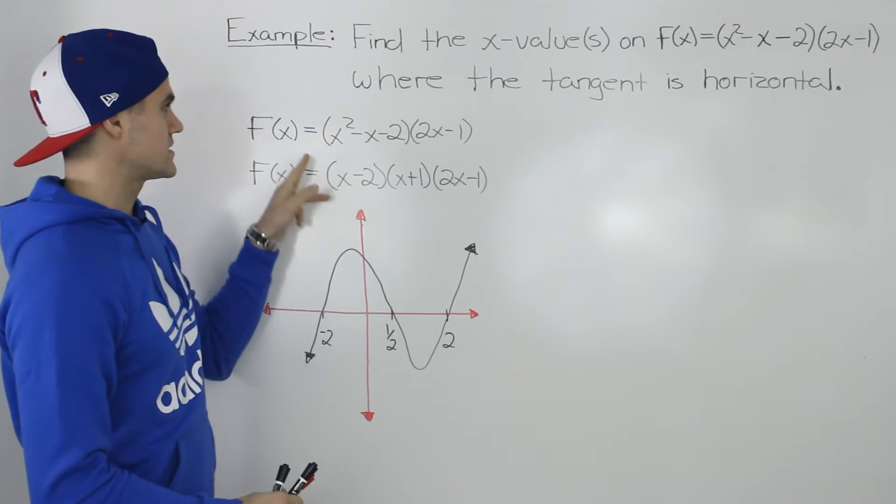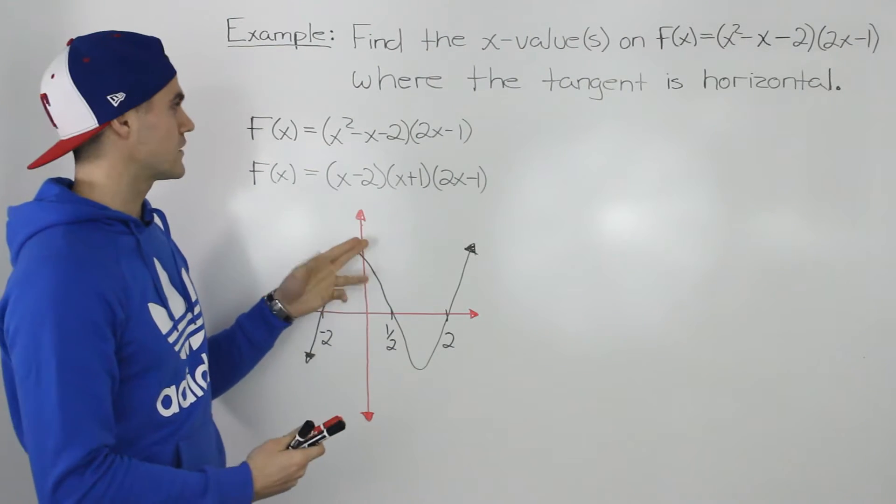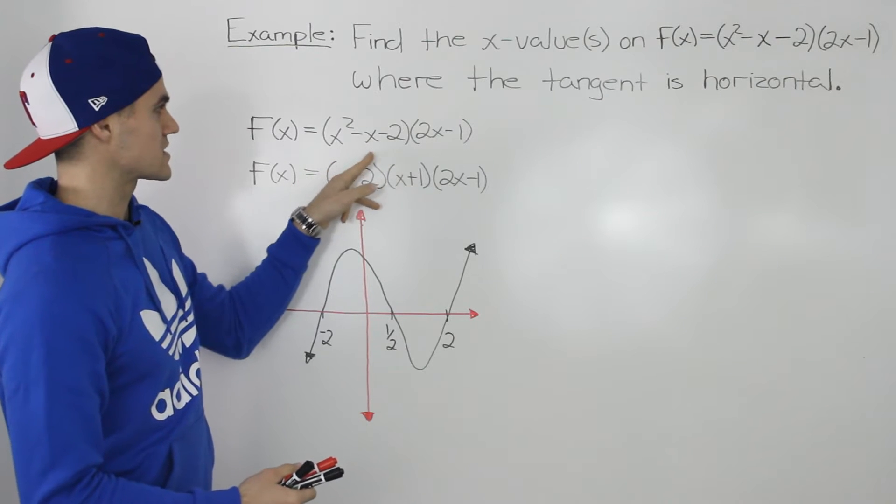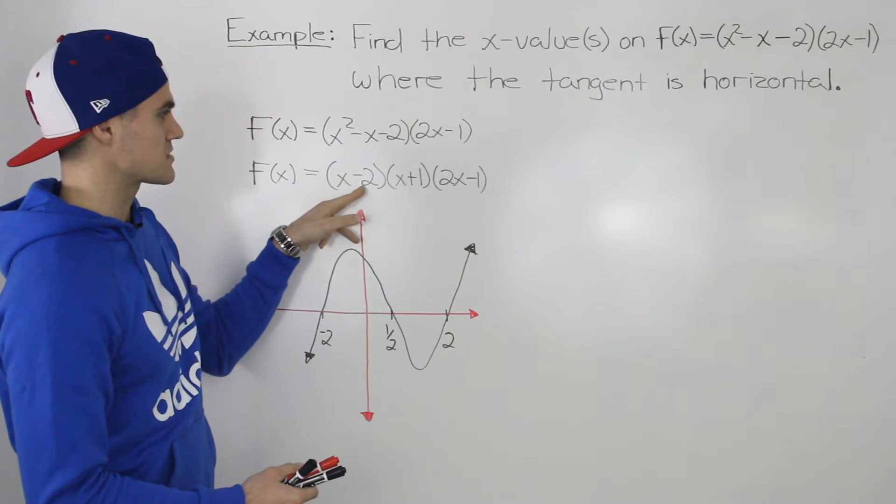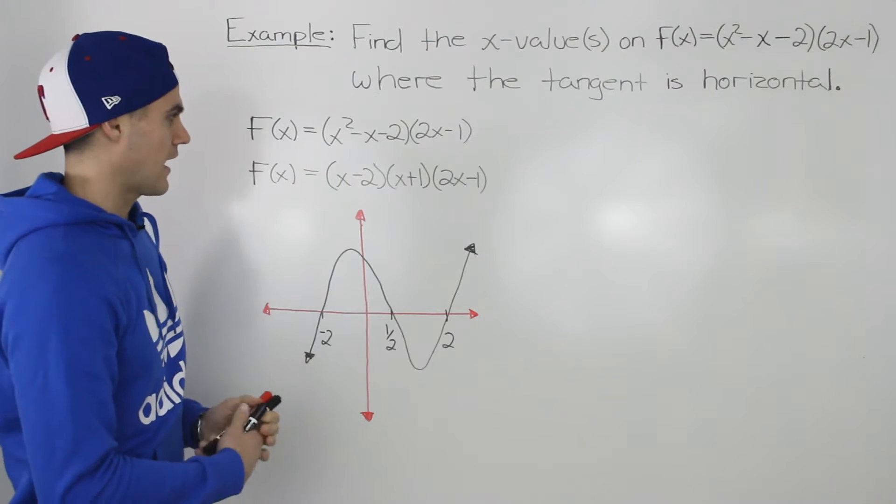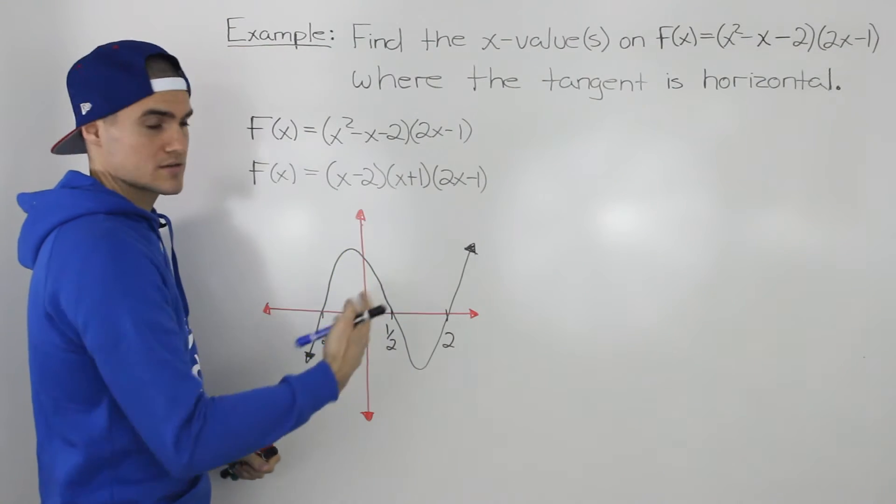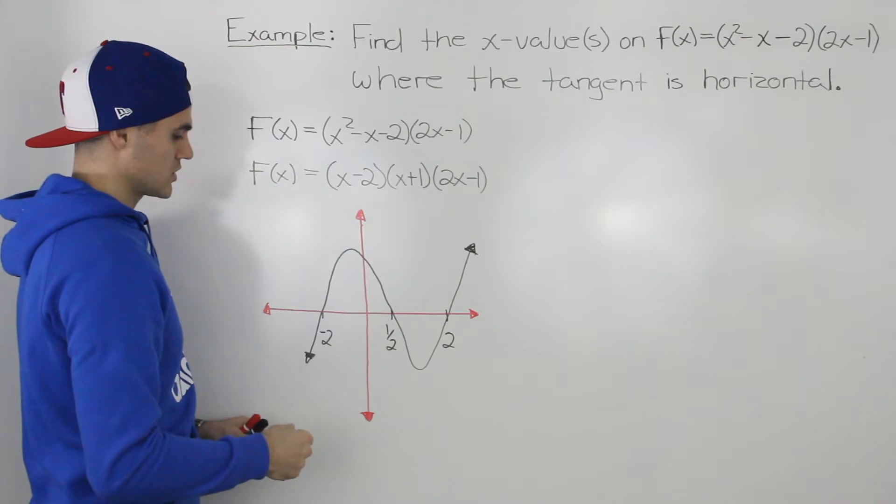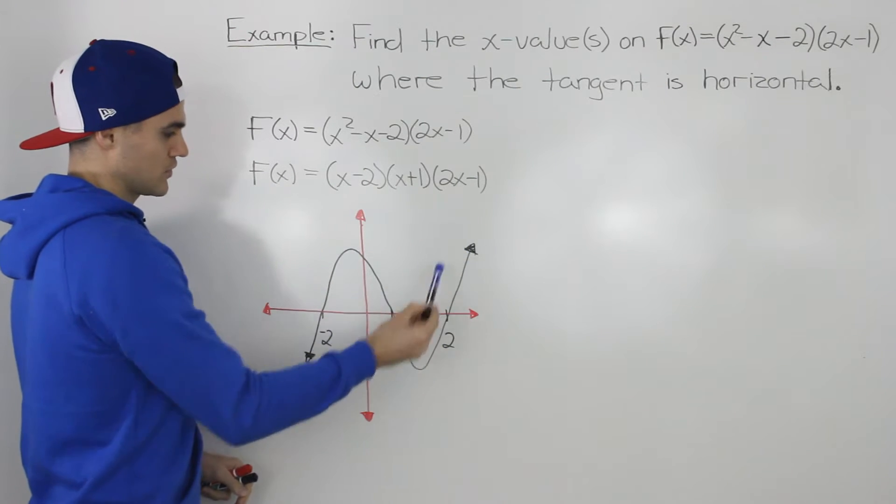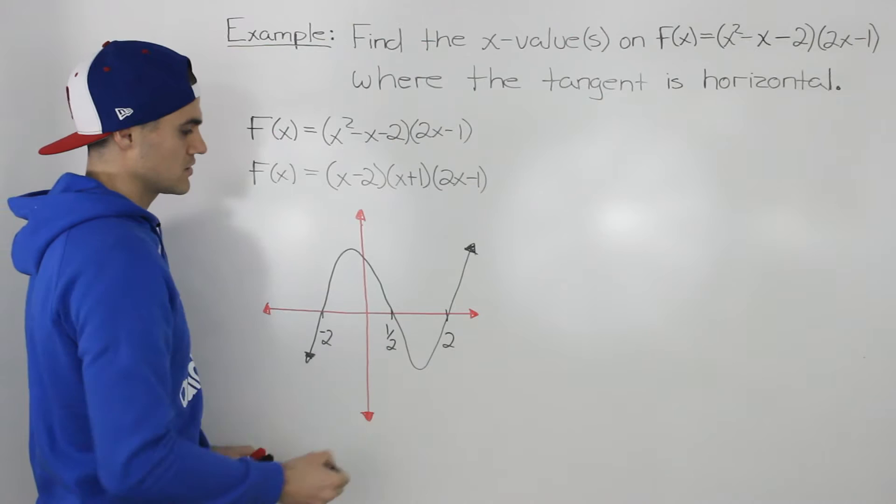So if we show this visually, we can take this function f of x and graph it because this x squared minus x minus 2 factors into x minus 2 times x plus 1, and we can see that the x intercepts would be 2, negative 1, and positive 1 half. So this is a cubic function. This is how the cubic function looks with those x intercepts.